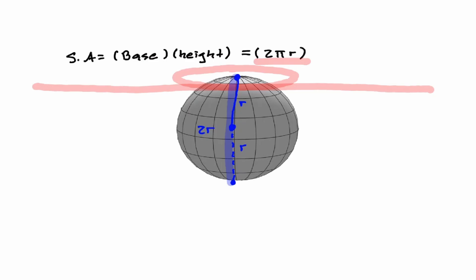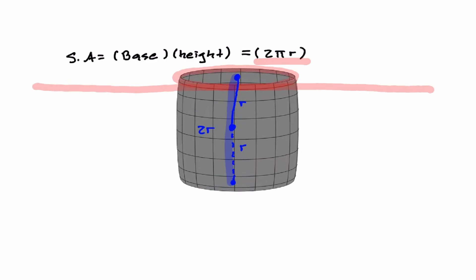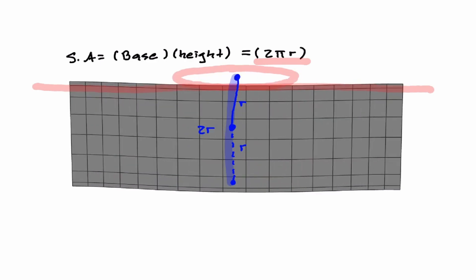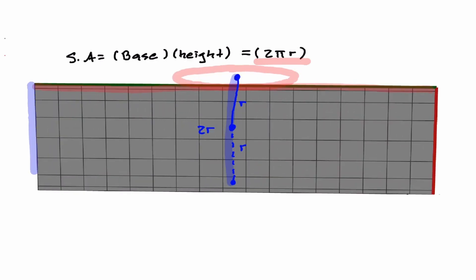And now that we have defined this distance, notice that when we open our sphere one more time, that distance of 2r is equivalent to the height of our rectangle. So now in our formula of a rectangle, the height we can just substitute it with 2r.